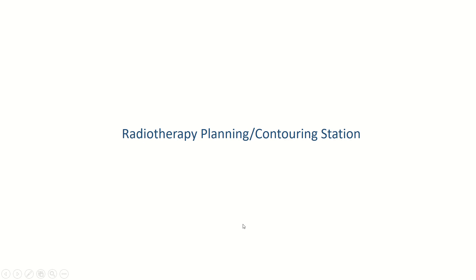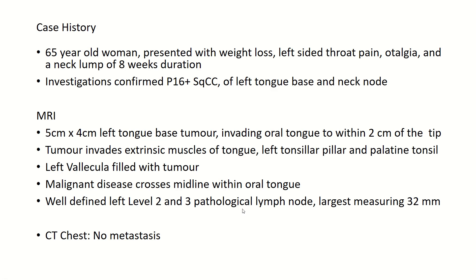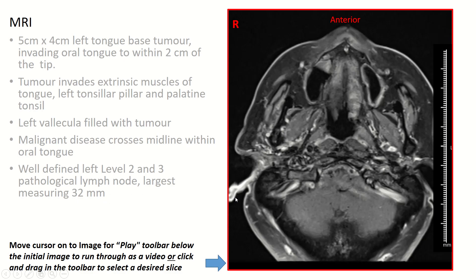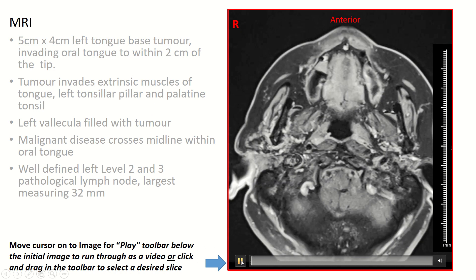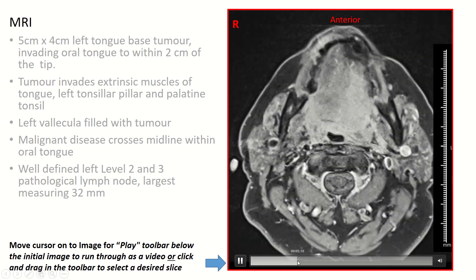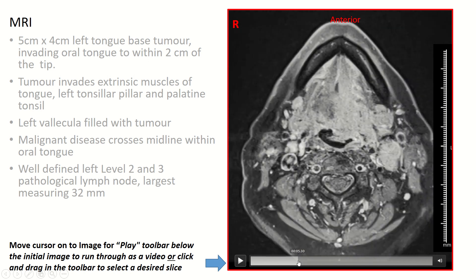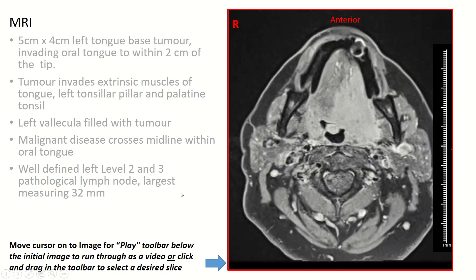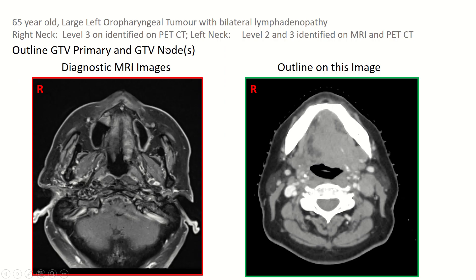The timing for this station starts now. A brief history will be given, followed by the image data set with the report on the left. Get the cursor to the image data set and click. You can also left click and drag. Once you have gone through the images and understood, you can move to the next slide.